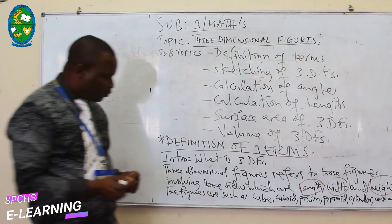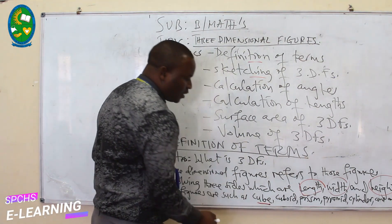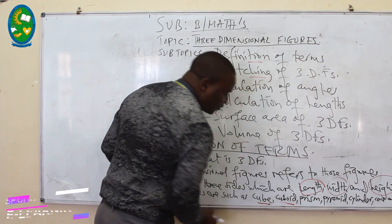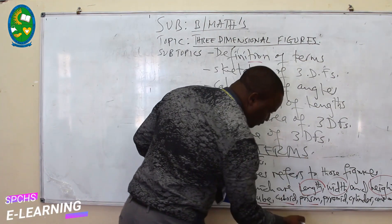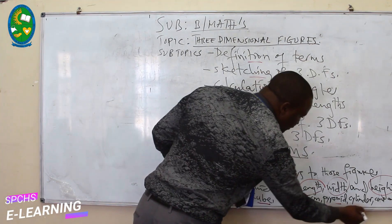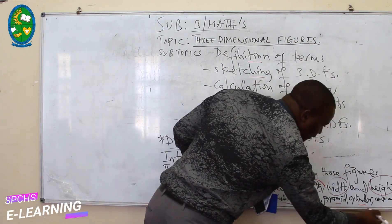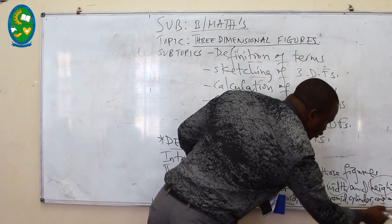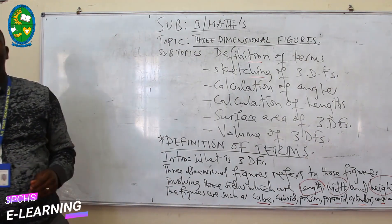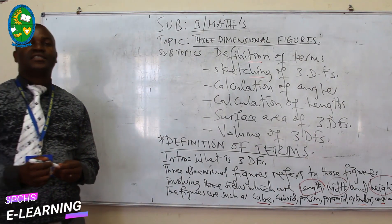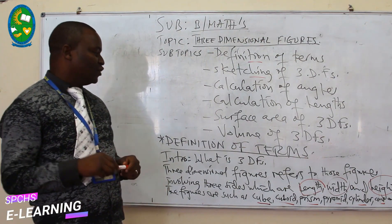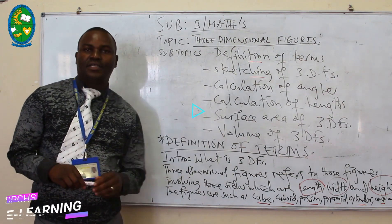These figures include cube, cuboid, prism, pyramid, cylinder, cone, and sphere. These are the figures which can be calculated by using three sides.